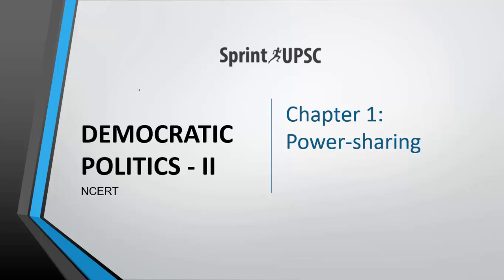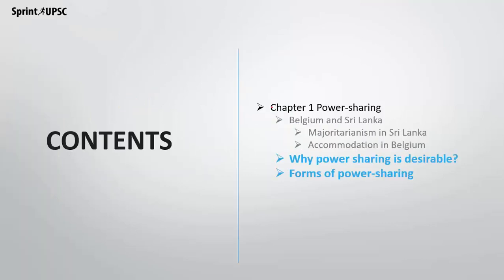Hello everyone, welcome to Sprint UPSC. We are discussing class 10th NCERT Democratic Politics 2, chapter 1 on power sharing. In the first part, we discussed the Belgium and Sri Lanka examples — how majoritarianism works in Sri Lanka and how accommodation works in Belgium. In this session, we are going to discuss why power sharing is desirable and what are the different forms of power sharing.